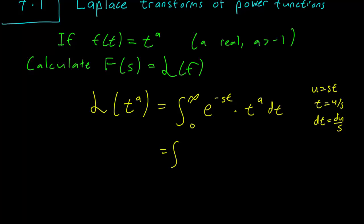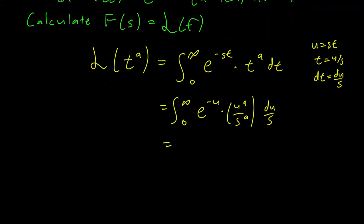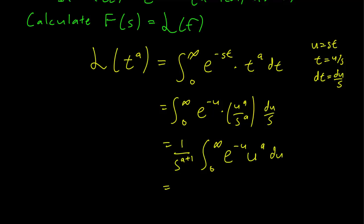Making all those transformations we find that we have e^(-u) times u^a over s^a, because t is equal to u over s and dt is du over s. And s is a constant here so we can just take it out, giving us one over s^(a+1) times the integral of e^(-u) u^a du.